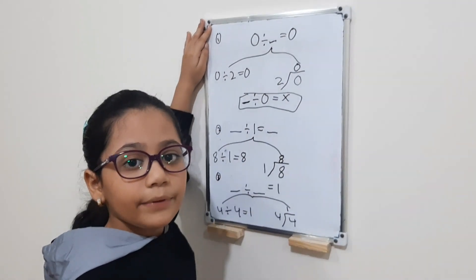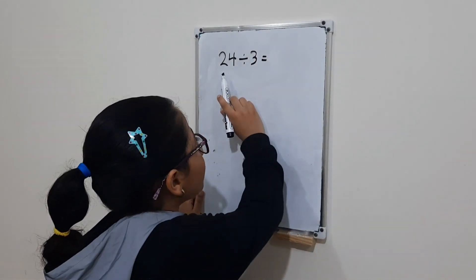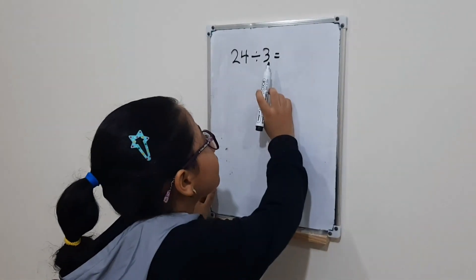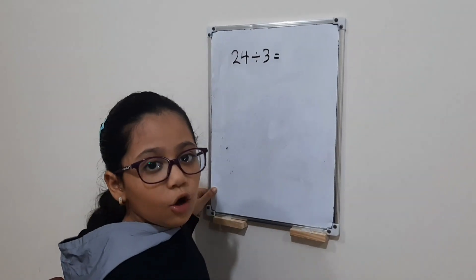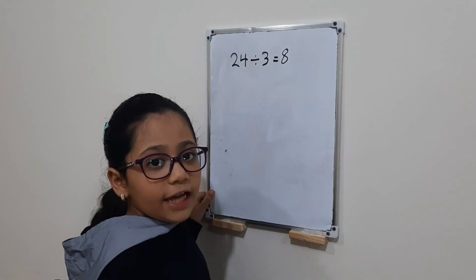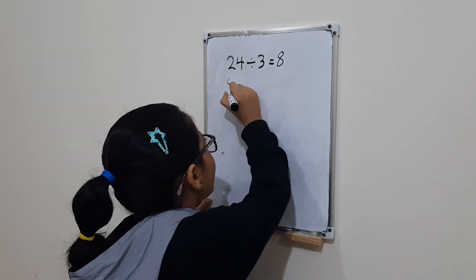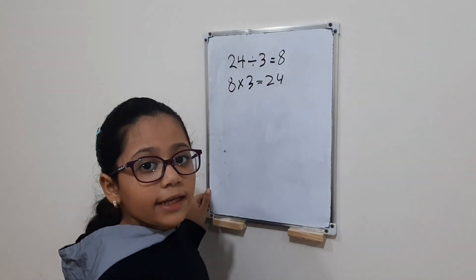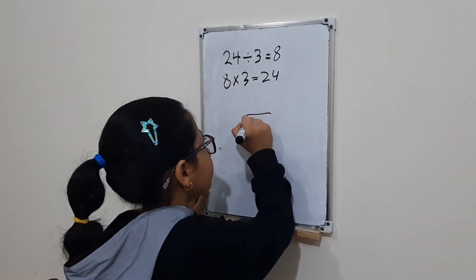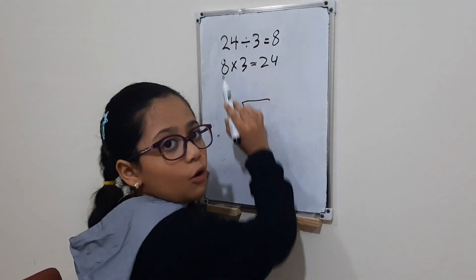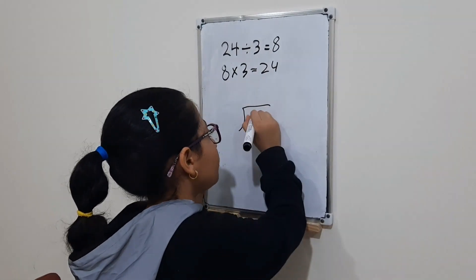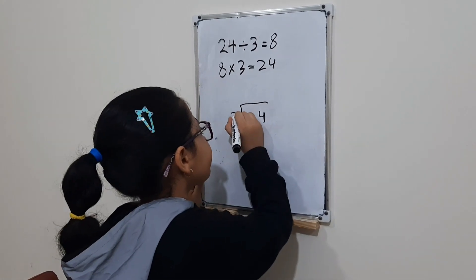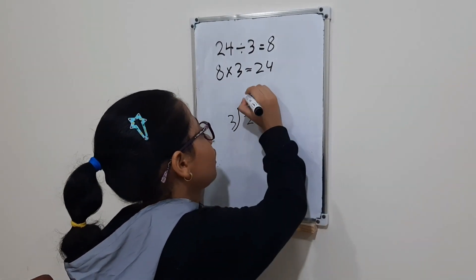Let's see some examples. Here, 24 divided by three: we ask what times three equals 24, so the quotient is eight, because eight times three equals 24. We will make it in the vertical way: 24, which is the dividend, goes down; three, which is the divisor, is next to it; and the quotient, which is eight, goes up.